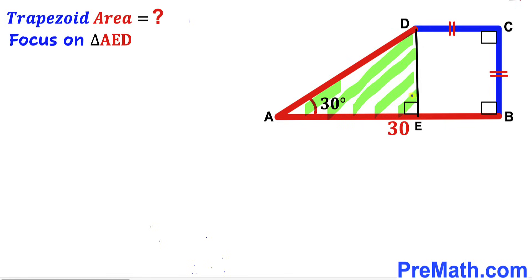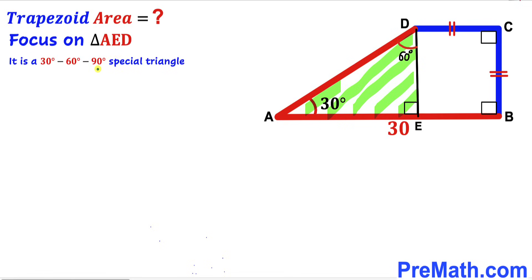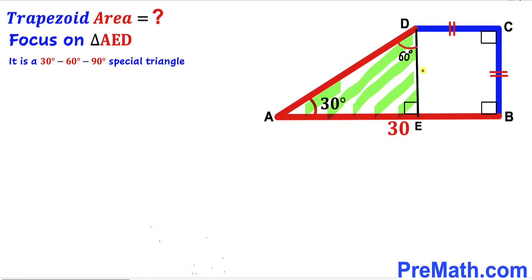We know one angle is 90 degrees and another is 30 degrees. Since the sum of all interior angles in a triangle is 180 degrees, the third angle must be 60 degrees. Therefore, triangle AED is a 30-60-90 special triangle.